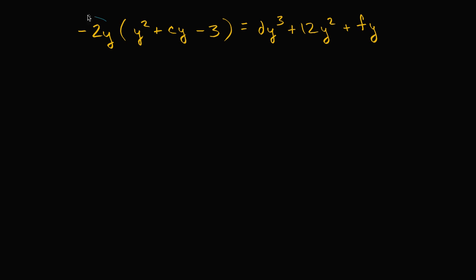So let's distribute it. First we can think about what negative two y times y squared is going to be. Negative two y times y squared, well that's going to be negative two y to the third power. Because y to the first times y squared is y to the third power.